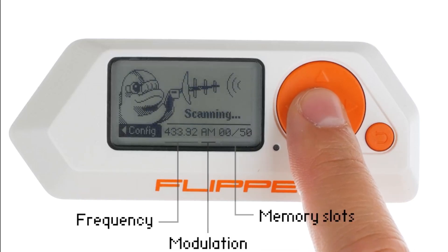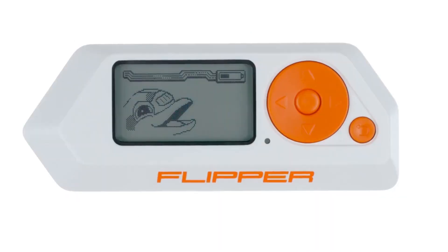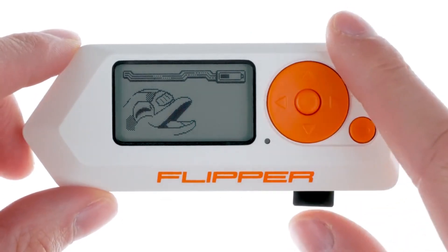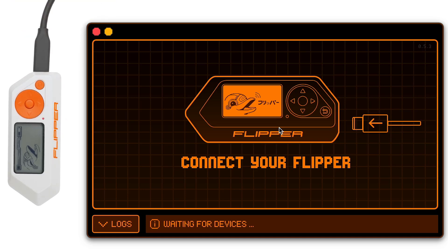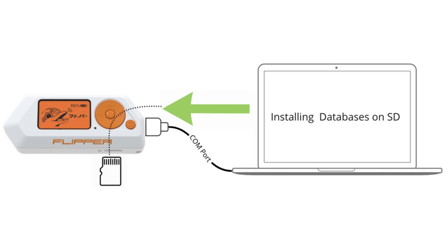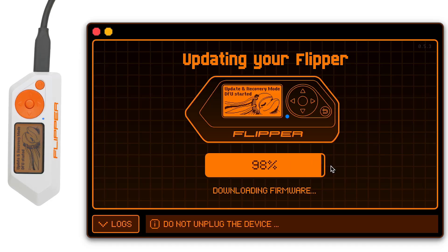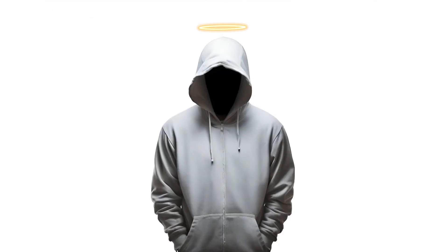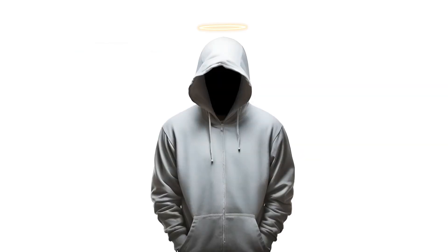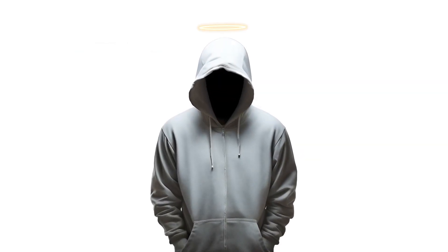To utilize the Sub-Gigahertz functionality, insert a microSD card for app access. Ensure your Flipper Zero's firmware is up-to-date before launching the Sub-Gigahertz application, as it relies on database storage on a microSD card. For detailed instructions on updating your firmware, refer to my Flipper Zero Firmware update basics tutorial video, available through a link displayed on your screen somewhere right now.